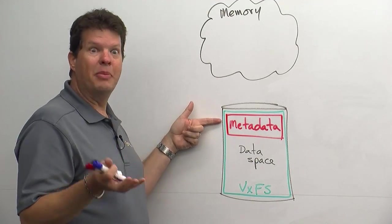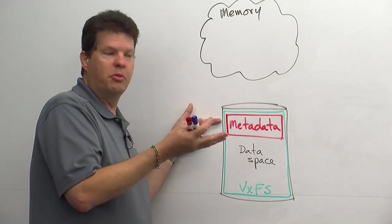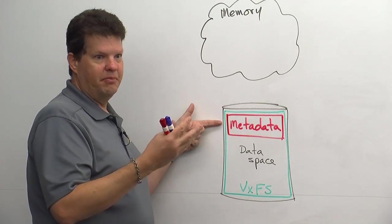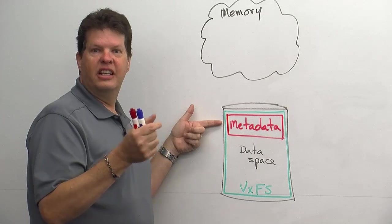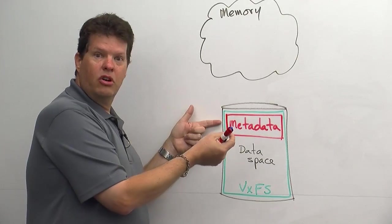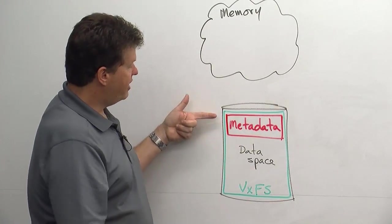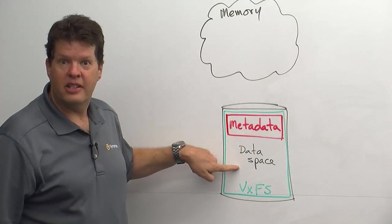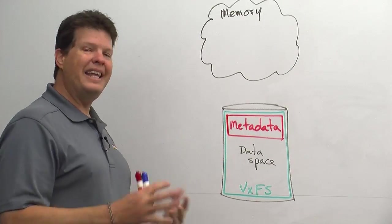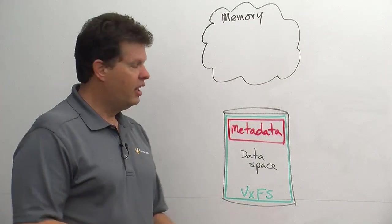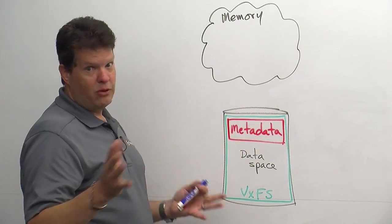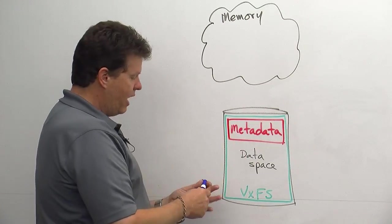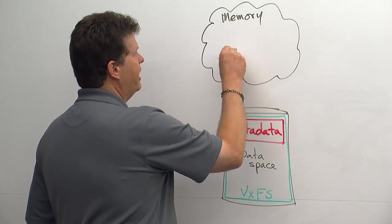This is where it's going to have all our behind the scenes information, our super block, basically our information that defines where the inodes are, the allocation units, all these things that point to where the data resides on disk. Well, when a standard Unix file system is mounted, the metadata itself is going to be loaded into memory.